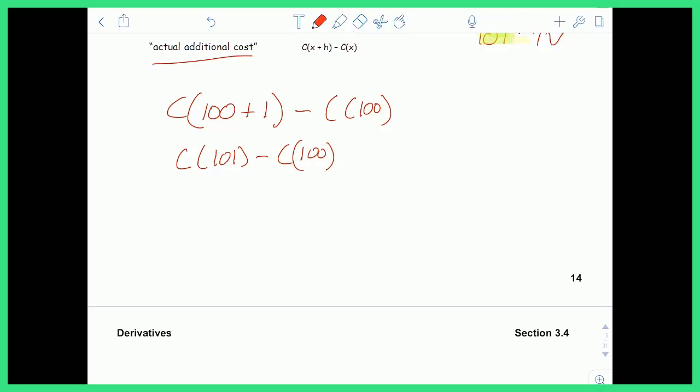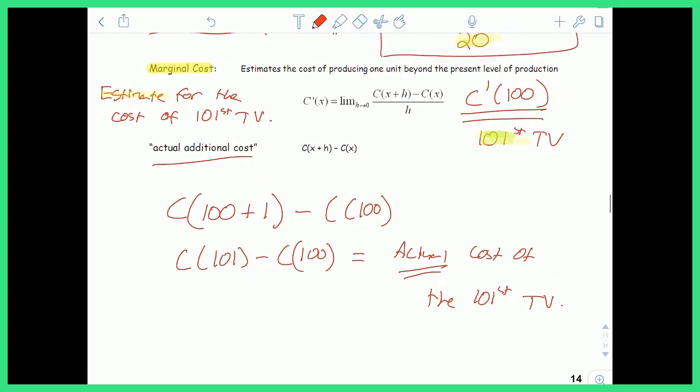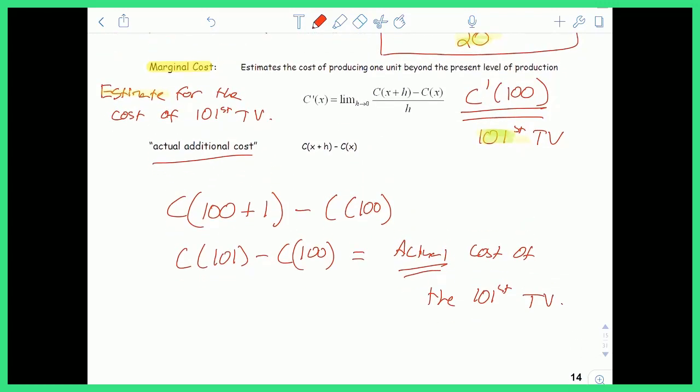equals the actual cost of the 101st TV. So you can actually find the real number, but derivatives are a much faster way to make estimations for large quantities of values. It's going to come really in handy later on in the video.